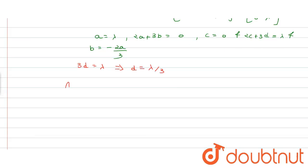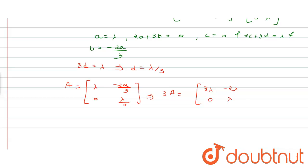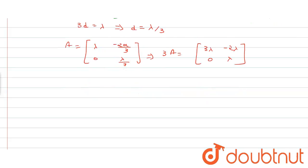So A equals the matrix [[λ, −2λ/3], [0, λ/3]], which means 3A equals [[3λ, −2λ], [0, λ]]. The determinant of 3A equals 3λ² equals 108.